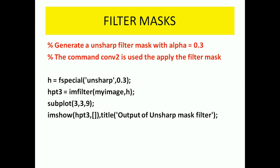And finally, we are using an unsharp mask filter with an alpha value of 0.3. Simply we use fspecial, which is used to apply different types of filters. Here we are using the unsharp filter mask with alpha value of 0.3. This is the output image of the unsharp filter mask. The subplot position of this image is the ninth position, and the title is given as 'output of unsharp mask filter'.